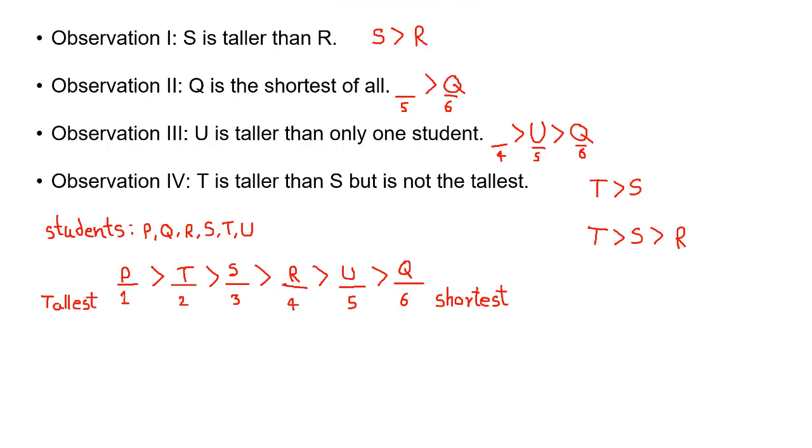Now our question is the number of students taller than R. Number of students taller than R are P, T and S. That means three students are taller than R.